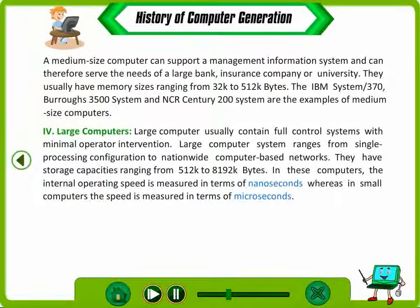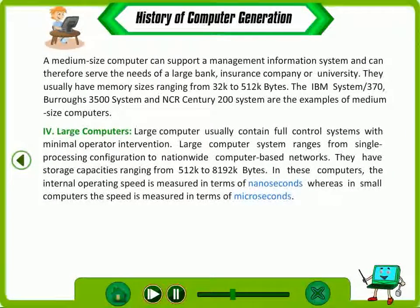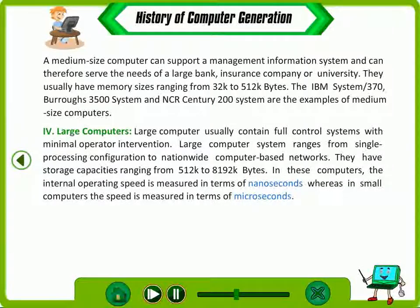Large Computers. Large computers usually contain full control systems with minimal operator intervention. Large computer systems range from single processing configurations to nationwide computer-based networks. Their storage capacity ranges from 512K to 8192K bytes. In these computers, the internal operating speed is measured in terms of nanoseconds, whereas in small computers the speed is measured in terms of microseconds.